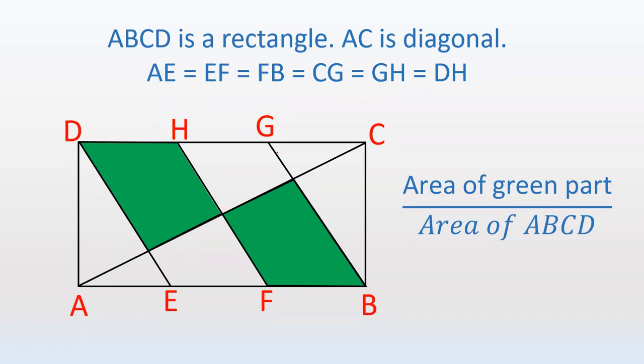Here ABCD is given as a rectangle and its length is divided into three equal parts that is trisected. AE, EF, and FB are trisected. Similarly, DH, GH, and GC are trisected.